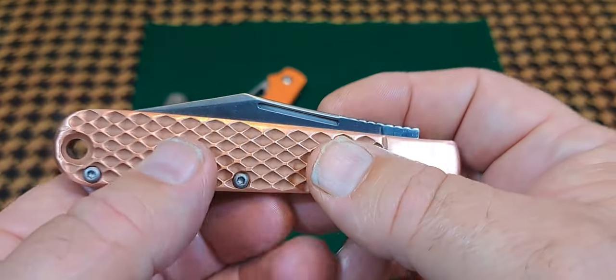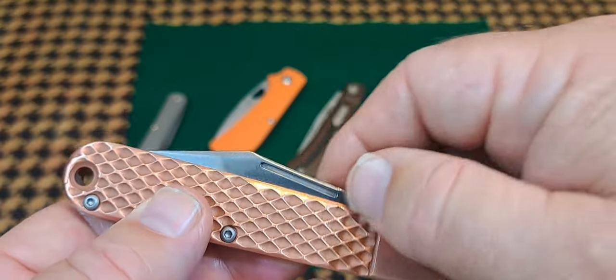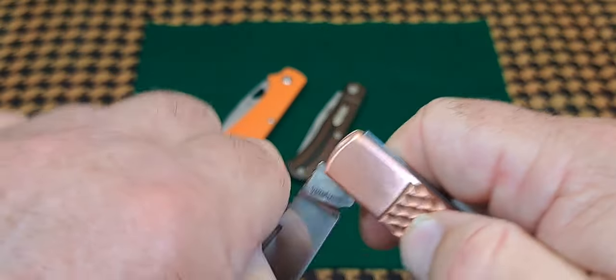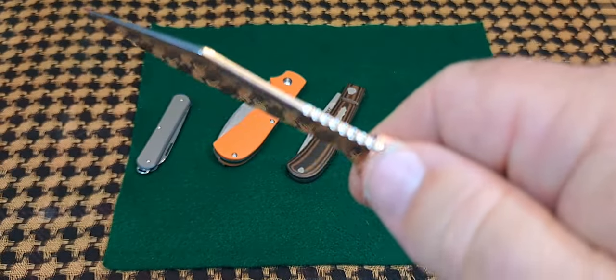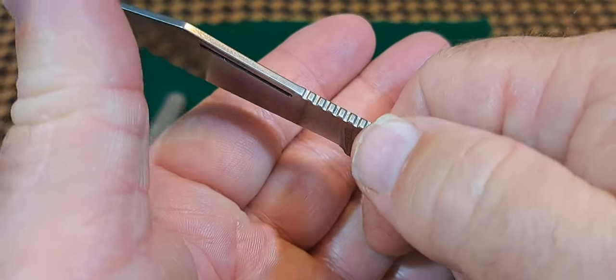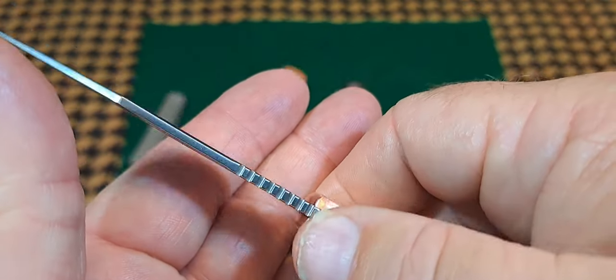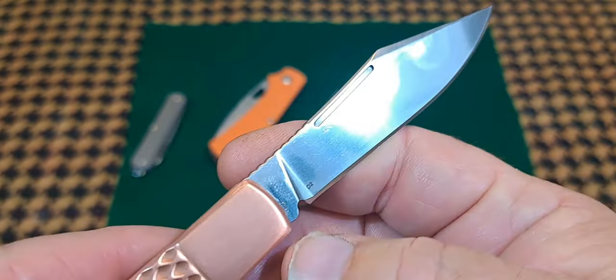You'll notice that the pivot pin for the blade is hidden. That's very similar to this knife. I don't think there's any way to take this knife apart. That's one of the hallmarks of a modern knife—being able to disassemble it easily. Another thing about this knife: you've got a traditional nail nick here.